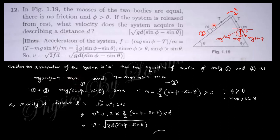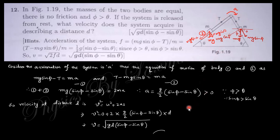For body two, the equation is: T − mg·sinθ = m·a. Adding these two equations gives: mg(sinφ − sinθ) = 2m·a, so acceleration a = g(sinφ − sinθ)/2. Since φ is greater than θ, this acceleration is positive and acts in the assumed direction.